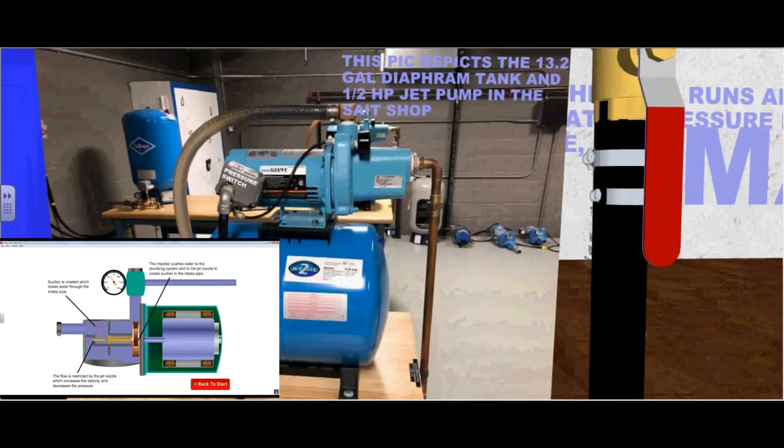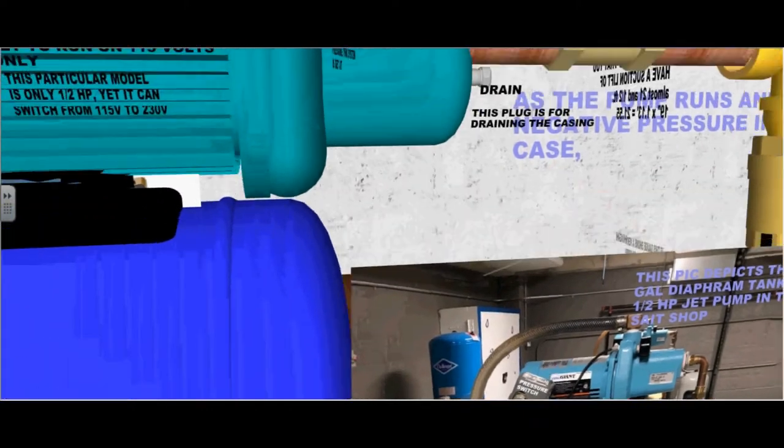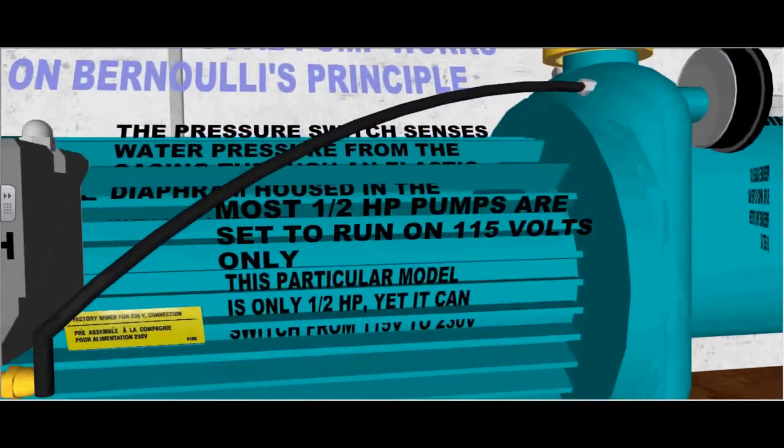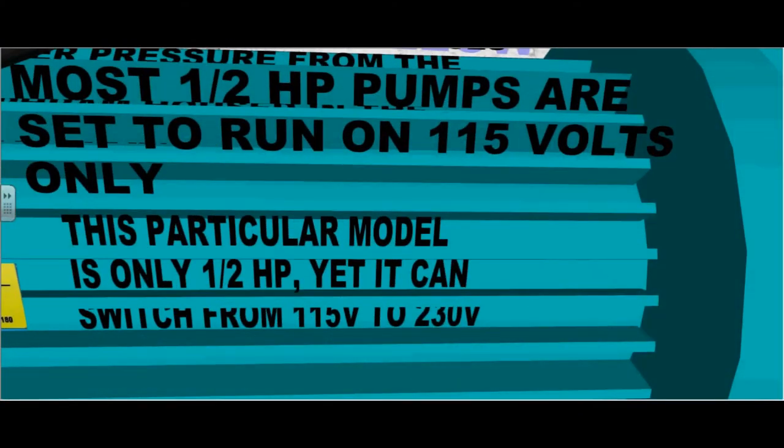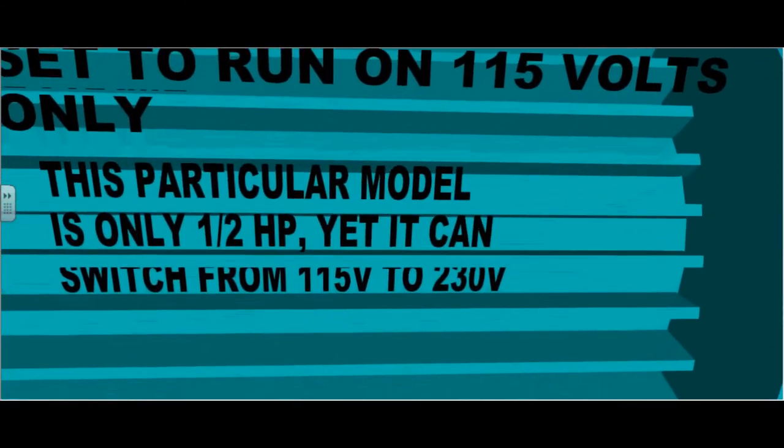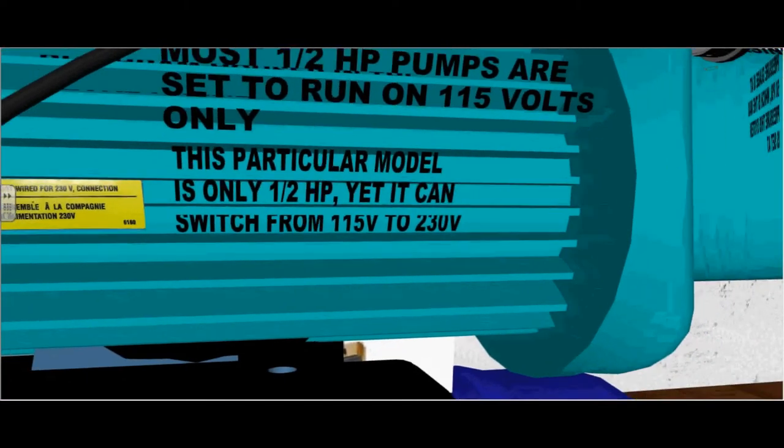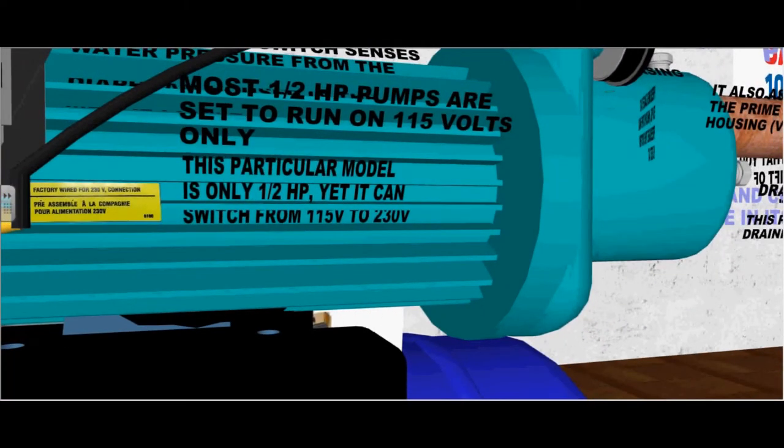This pic depicts the 13.2 gallon diaphragm tank and half horsepower jet pump in our shop. A centrifugal pump works on Bernoulli's principle. Most half horsepower pumps are set to run at 115 volts. This particular model is only a half horsepower, yet it can switch from 115 volts to 230 volts as illustrated on the factory wired stamp.